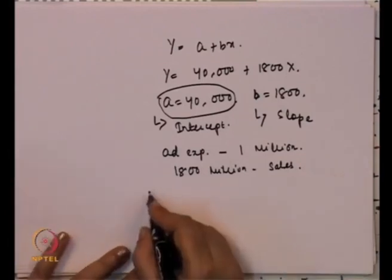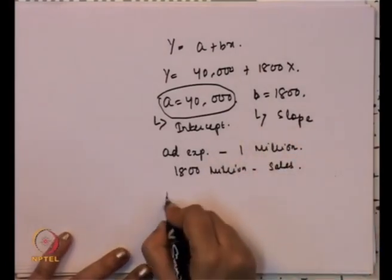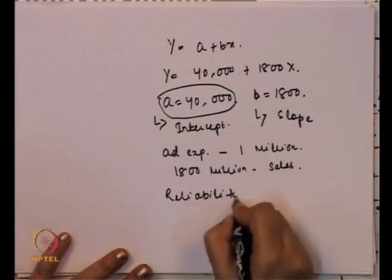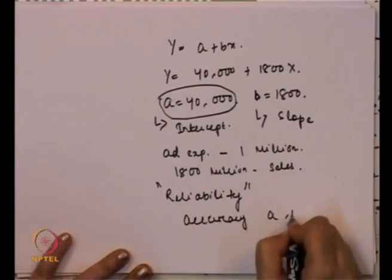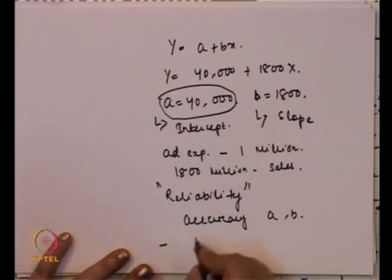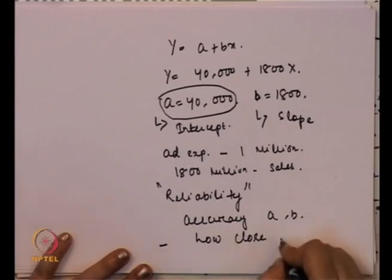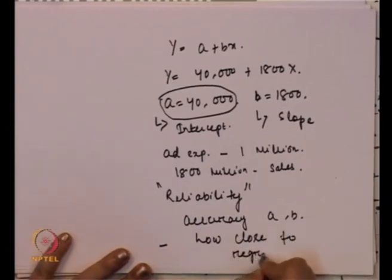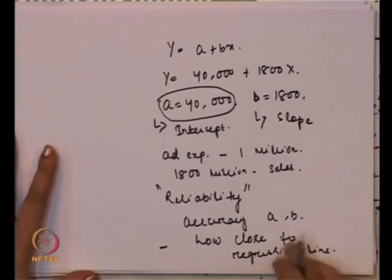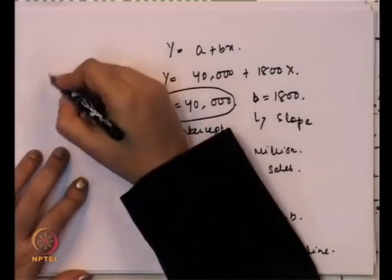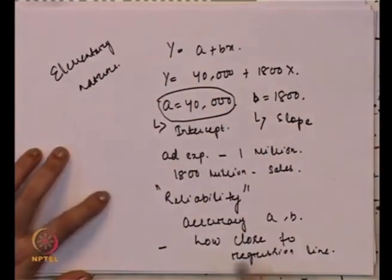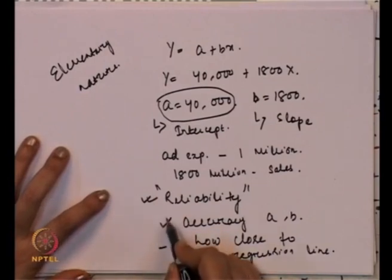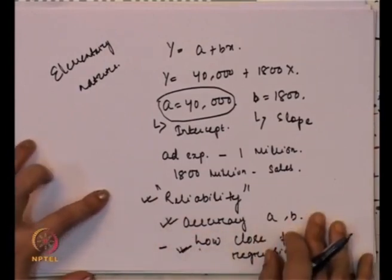The question is: if these are the values of a and b, what is the reliability of this value? How reliable or how accurate are these values of a and b? Or, how close are these values to the actual regression line? This cannot be solved through the rudimentary method, because it is a crude method, very elementary in nature. This rudimentary method cannot address questions about reliability, accuracy, or closeness to the regression line.